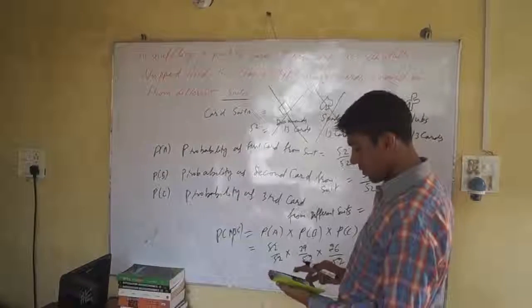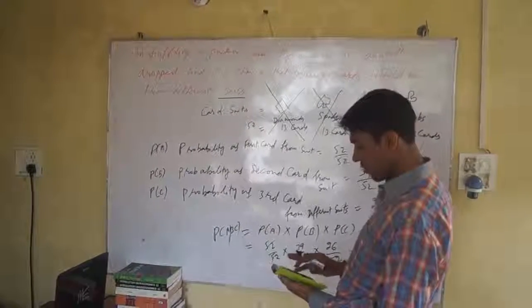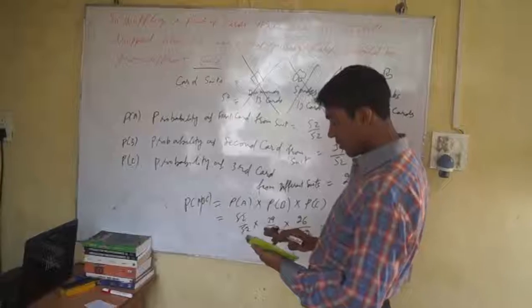Next is 52 into 52, this is 2704. If we divide 1014 divided by 2704...